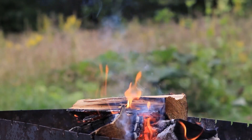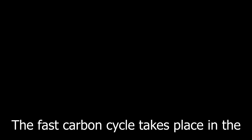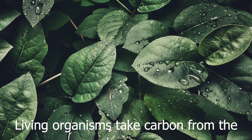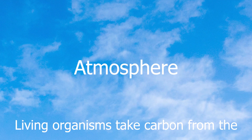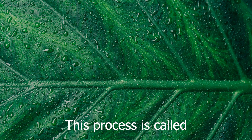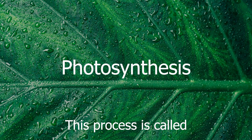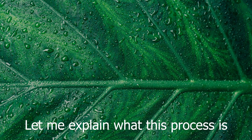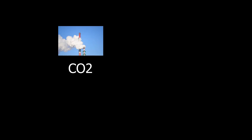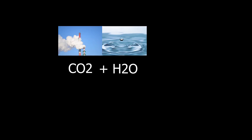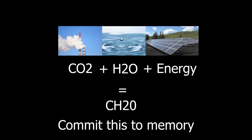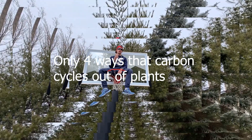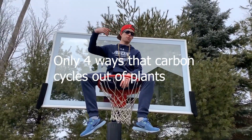Here we go. Fast carbon cycle takes place in the biosphere. Living organisms take carbon from the atmosphere. This process is called photosynthesis. Carbon dioxide, water, and energy react to make glucose — commit this to memory. Only four ways that carbon cycles out of plants.